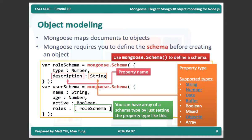Inside the roles array is another schema — the role schema, which has two fields: type as a Number and description as a String. Using mongoose.Schema you can define multiple schemas. The supported types for fields include String, Number, Date, Buffer, Boolean, Mixed, ObjectId, or Array. You just put the type here and you can use it.